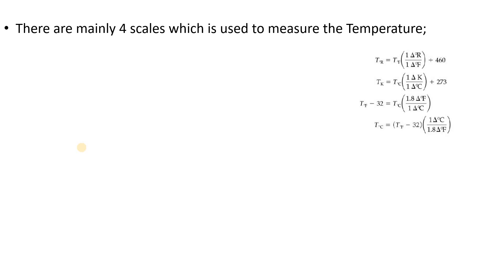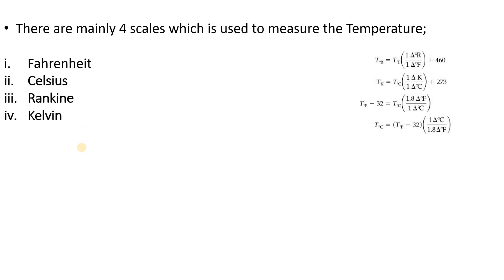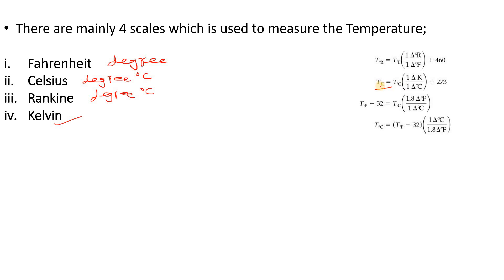There are four scales which are used to measure the temperature: Fahrenheit, Celsius, Rankine, and Kelvin. One thing I would like to tell you is that whenever we say Fahrenheit we say degree Fahrenheit, whenever we say Celsius we say degree Celsius, whenever we say Rankine we say degree Rankine — but Kelvin we simply say Kelvin. You can see this in the conversion relation between Kelvin and degree Celsius: Kelvin is known as Kelvin, but Celsius is known as degree Celsius.